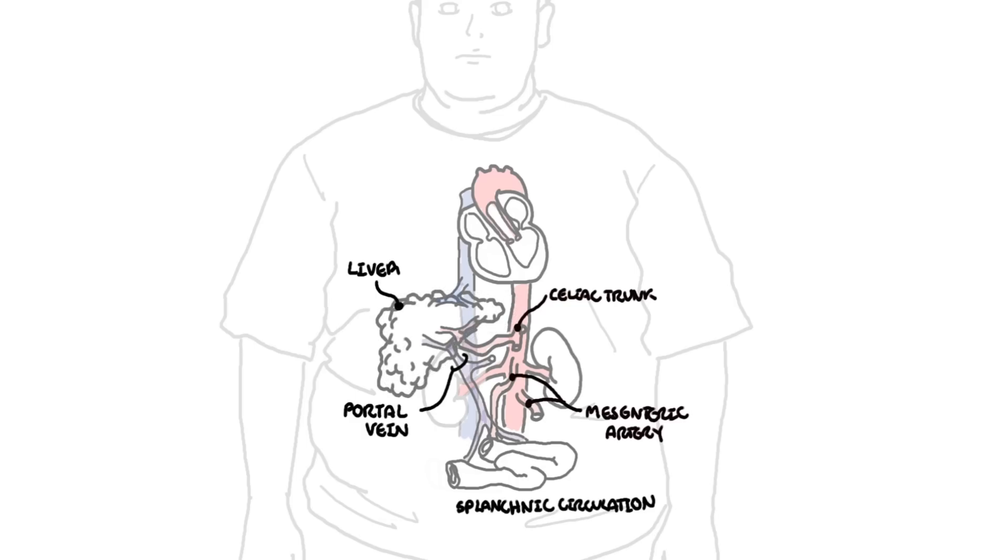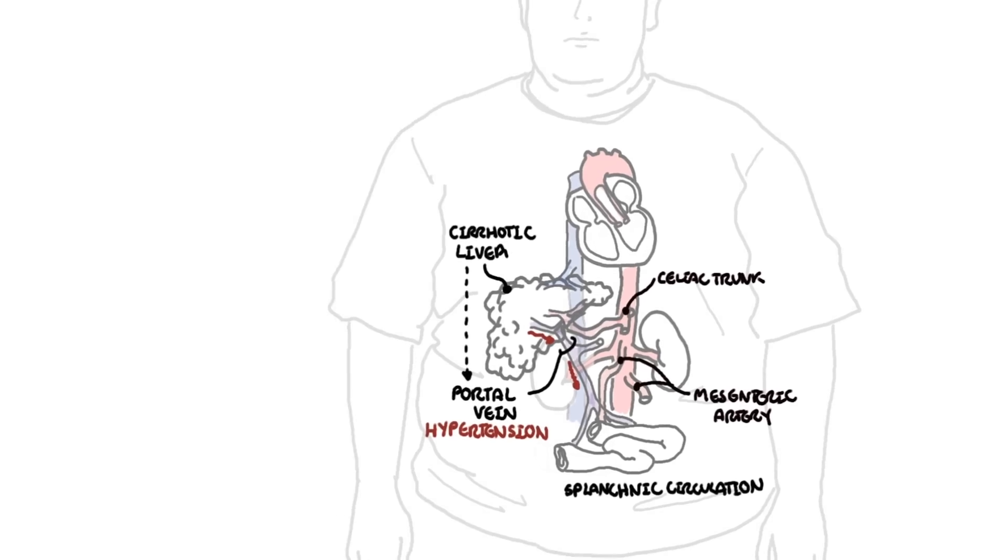Now, in liver injury, specifically liver cirrhosis, the fibrosis and injury can increase portal venous pressure resulting in portal hypertension. When this happens, the portal vein tries to help by dilating the blood vessels to reduce the portal venous pressure by releasing nitric oxide from endothelial cells.